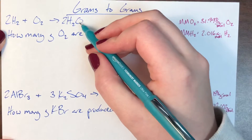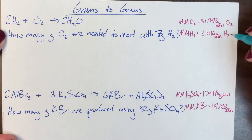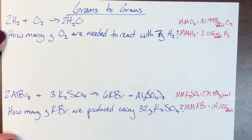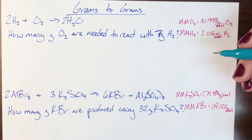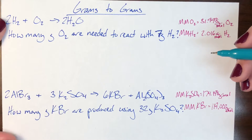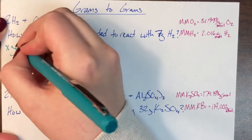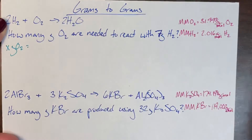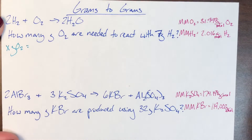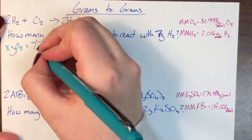I already have my balanced chemical equations and I've already calculated the molar masses of all necessary compounds off to the side. The problem says: how many grams of O2 — so x grams O2 — are needed to react with 7 grams of H2.